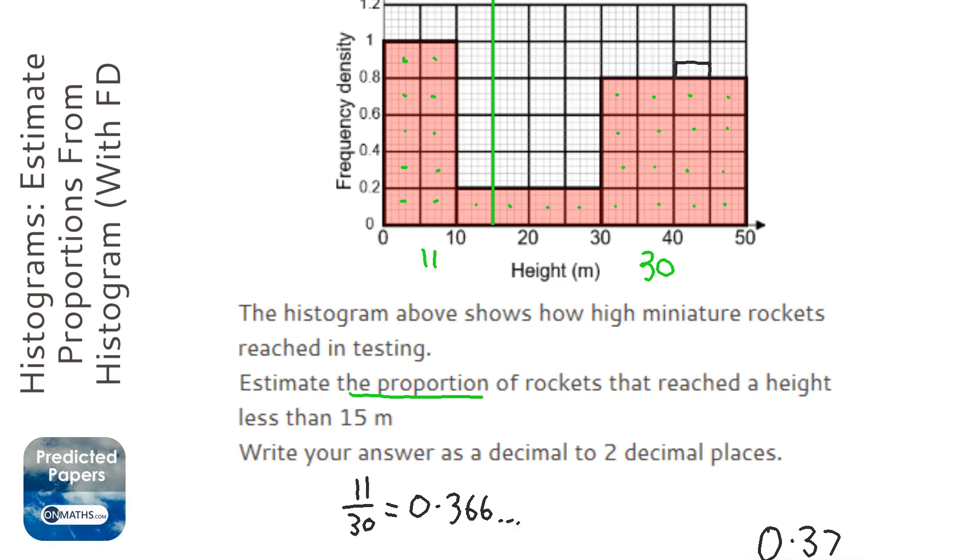Or it might be easier just working out the areas of each of the rectangles. I think if we were dealing with rectangles that were halfway like this and another one like that, maybe it would be easier to work with areas rather than counting squares.